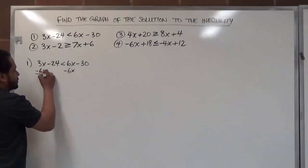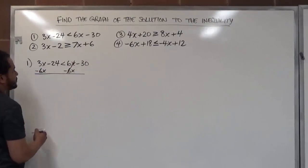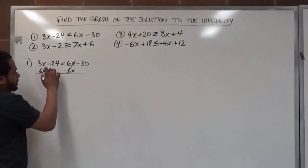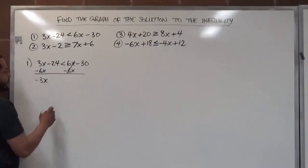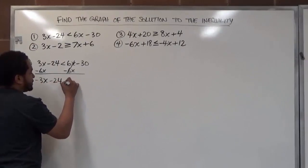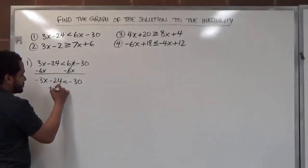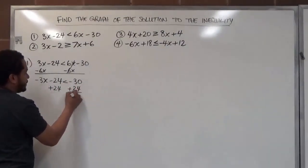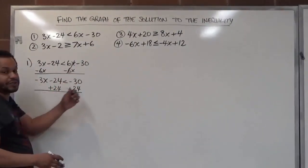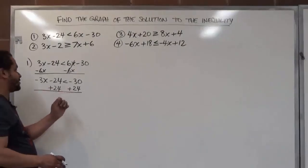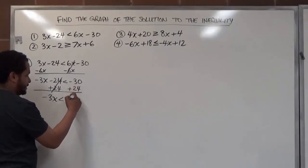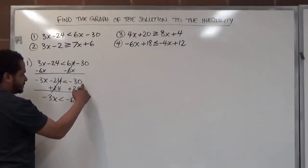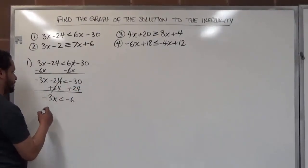We're subtracting 6x from both sides of the equation — these will cancel. At the same time, we can move the constant from the left side to the right side. So we'll have negative 3x minus 24, less than negative 30. Here we add 24 to both sides to get rid of the constant. The 24s cancel, leaving negative 3x less than negative 6, because 30 take away 24 is 6 and we keep the sign of the larger number.